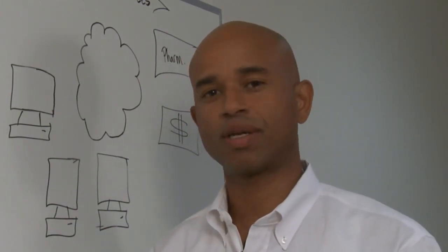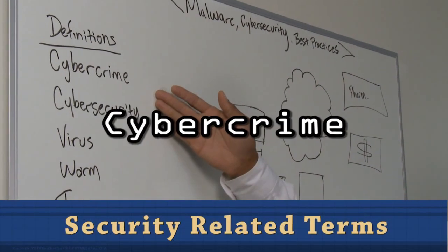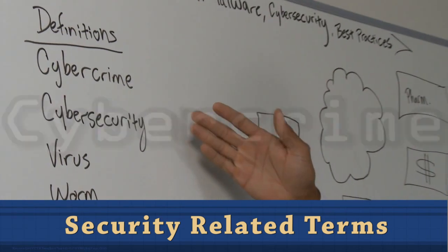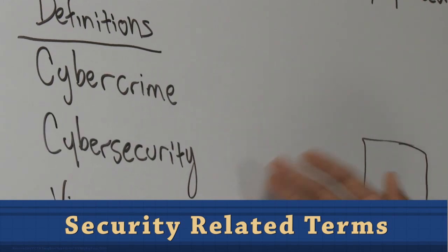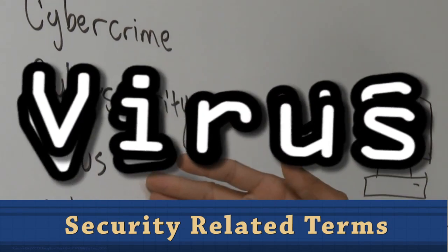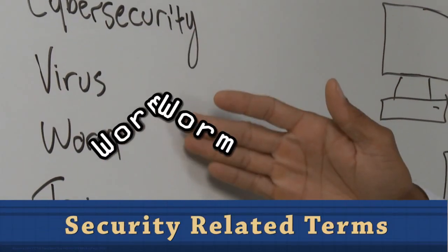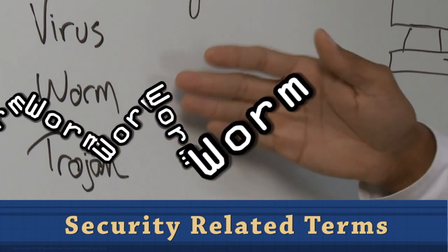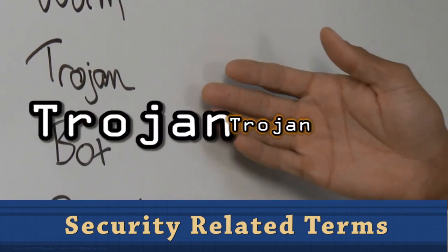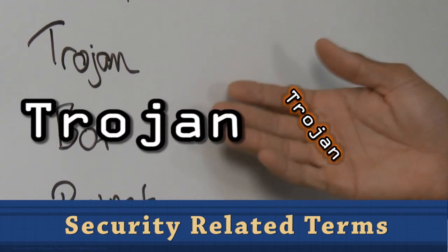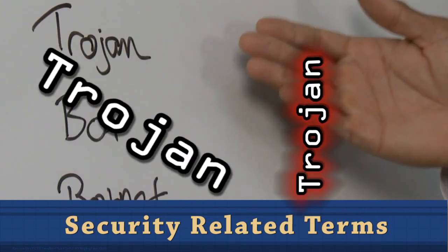For starters, I'd like to set a baseline of understanding by going over several security related terms. Cyber crime is any criminal act related to computers and networks. Cyber security is the protection of data and systems that are connected to the internet. A virus is a program which replicates by copying itself into another application. A worm is a modified form of a virus which can replicate by itself. A trojan is an application that does something differently than what it appears — such as a trojan downloader, a program that goes into your computer appearing to do one thing, but actually begins to download other applications.